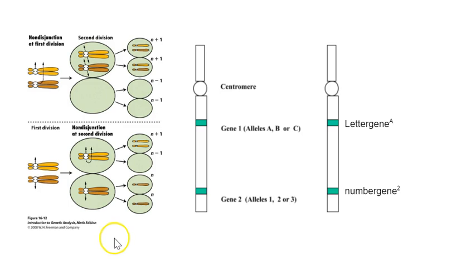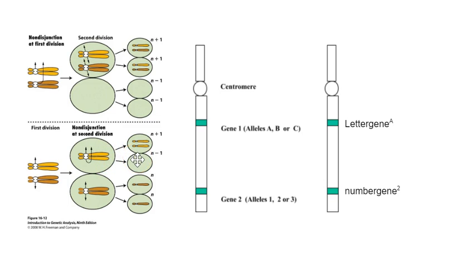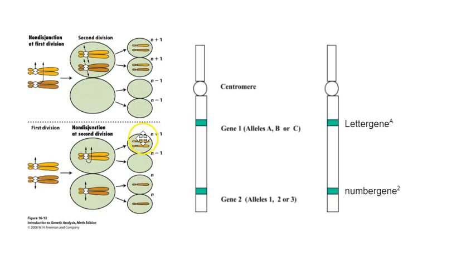In contrast, if the non-disjunction event happened at the second meiotic division, the first division went normally and each of the two cells got one of the homologs in its sister chromatid state. But the two sister chromatids that are supposed to be torn apart so each makes it into one gamete instead fail to separate — non-disjunction in meiosis two. Overall you'll have two normal gametes, but a quarter will be missing one chromosome and a quarter will have two identical copies, because sister chromatids are two identical copies of that chromosome.